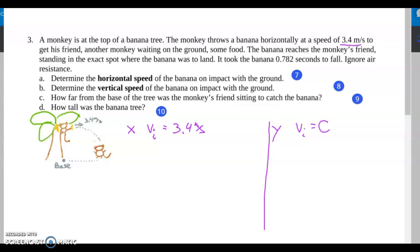Vertically its speed is zero meters per second because it's not thrown up or down at an angle, it's just thrown horizontally. Horizontally it's moving at a constant speed, and vertically it's accelerating down towards the ground at negative 9.8 meters per second squared.